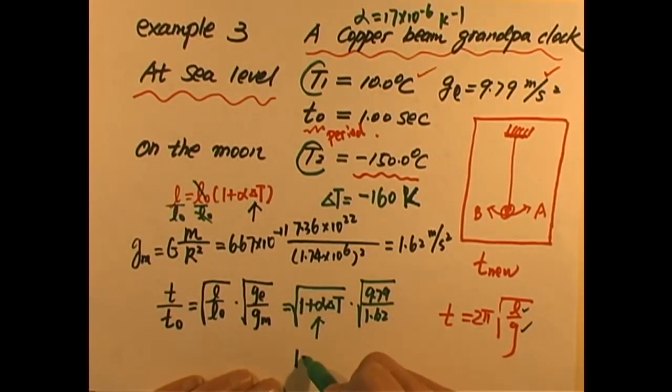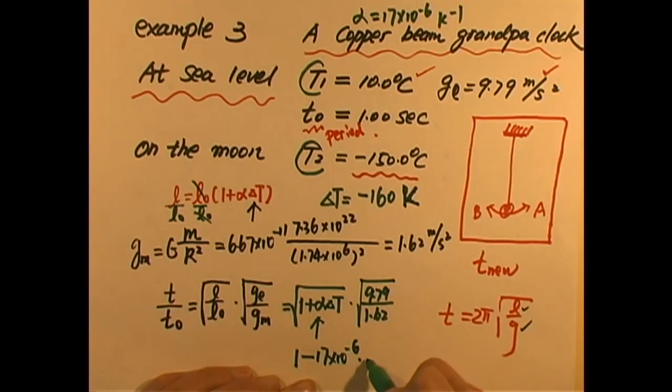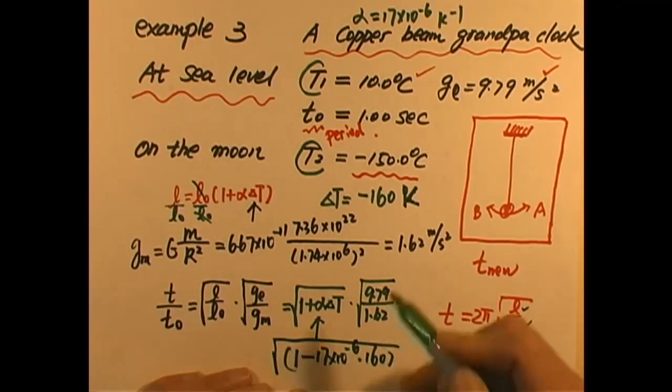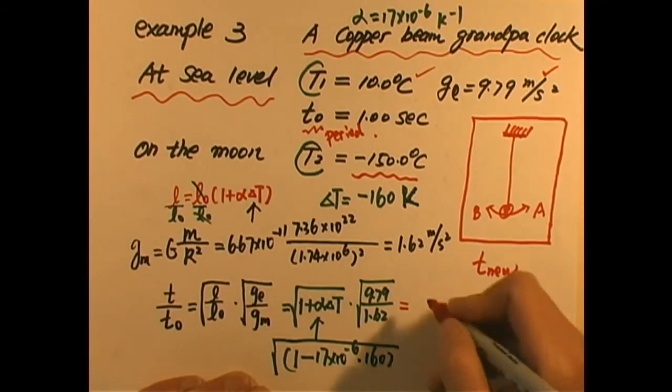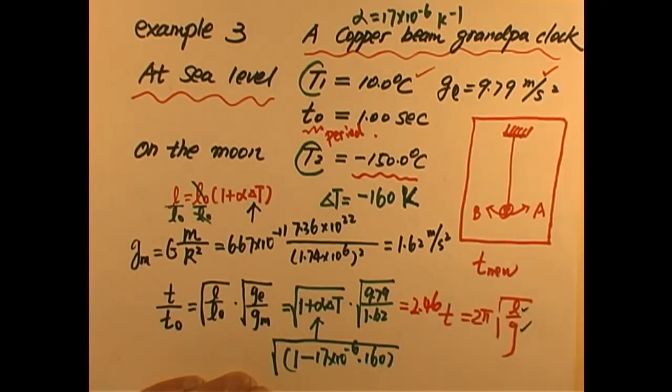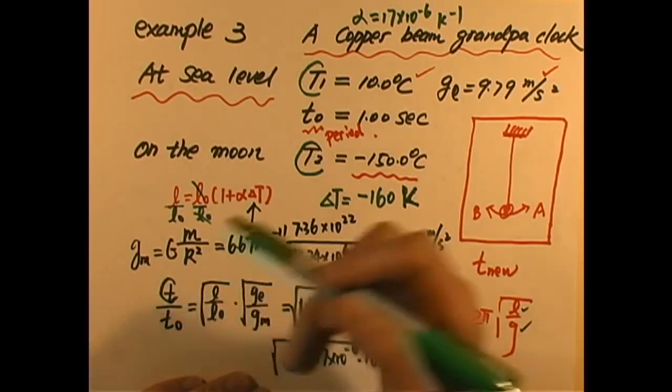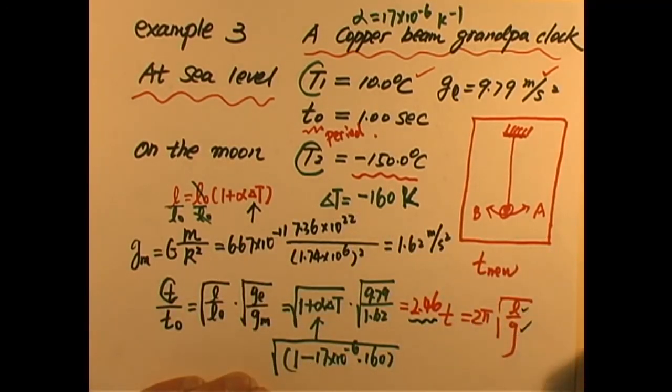So for this one it will become 1. Alpha delta is negative so it's negative. Alpha is 17 times 10 to the negative 6. Delta T is 160 it's negative so negative is here. See if we calculate that we square root that we multiply the result, guess what eventually the entire combination comes out T over T initial is 2.46. What does that mean? That means the final period will be 2.46 almost 2.5 times that of initial. Your initial if it's 1 second now this grandfather clock takes 2.46 seconds to finish one oscillation. That is very interesting.